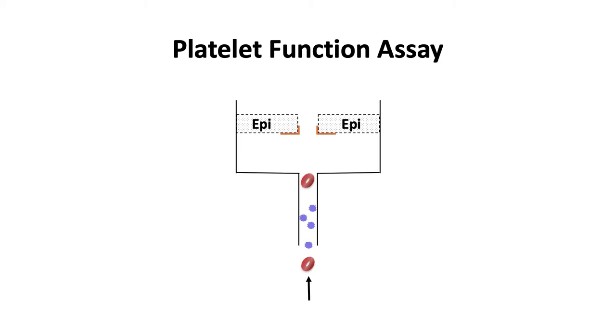Next, citrated whole blood is introduced at high shear rates. When platelets encounter the agonists, they become activated, forming a platelet plug. This platelet plug blocks flow in the tube. The time it takes to stop blood flow is reported as the closure time in seconds.